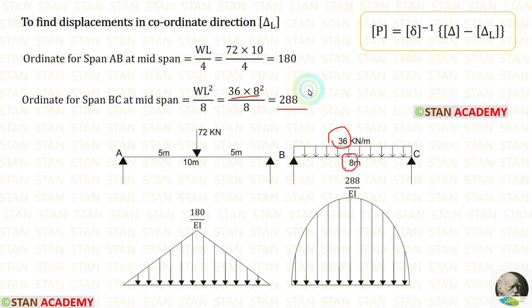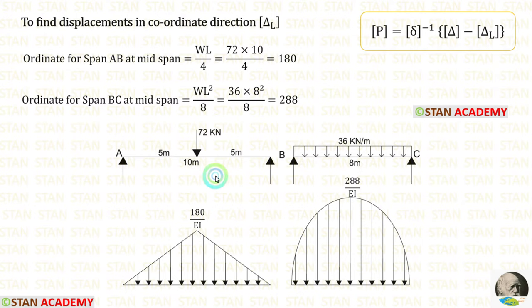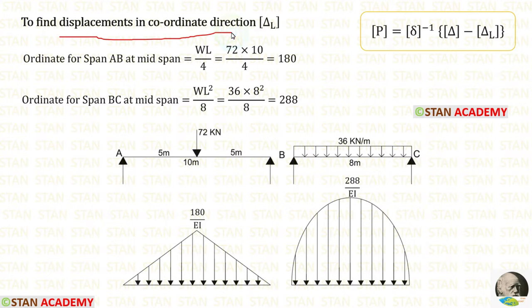We know that if a point load is acting, the bending moment diagram will be in the shape of a triangle. If UDL is acting, the bending moment diagram will be in the shape of a parabola. In the conjugate beams, the moment should be divided by EI. Now let us find the displacement in the coordinate direction. In this problem, we are having only one coordinate at point B, so at point B we have to find the displacement, which is the slope. We have to calculate the slope at point B because we removed MB from point B — so we have to calculate the rotation, which is slope.